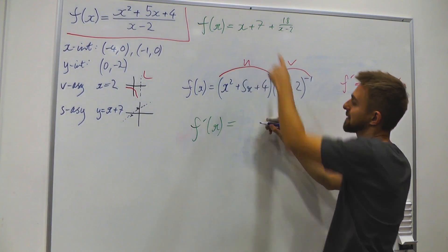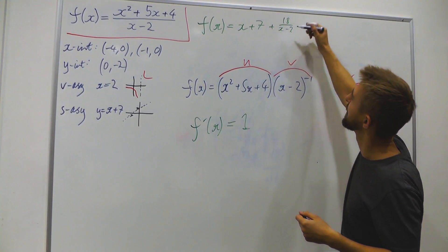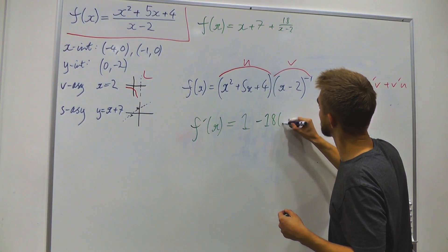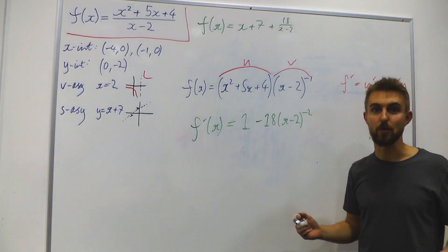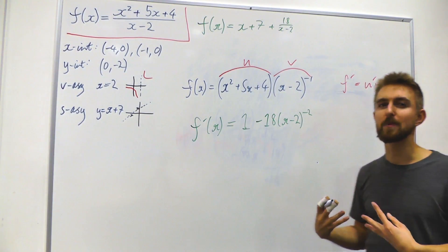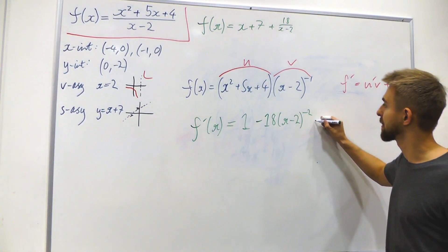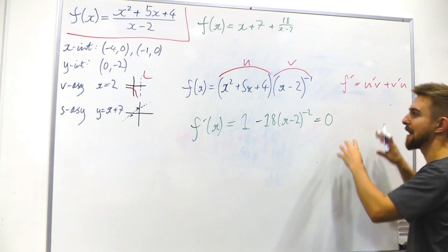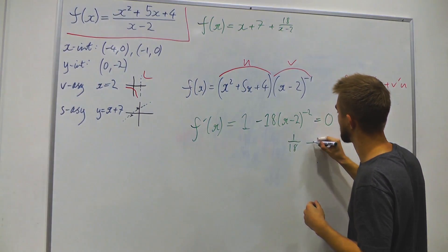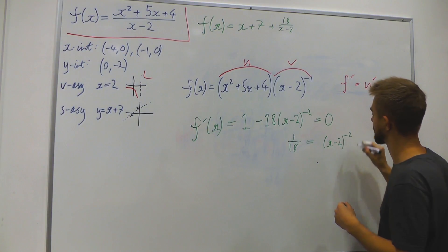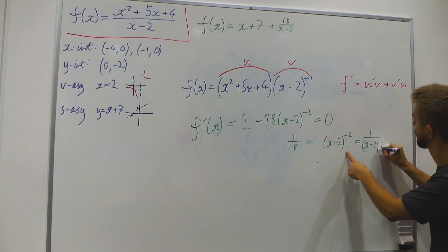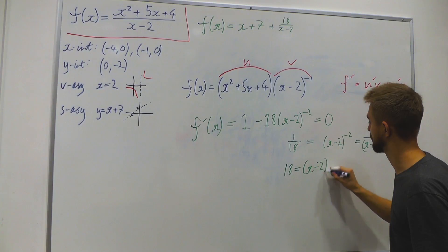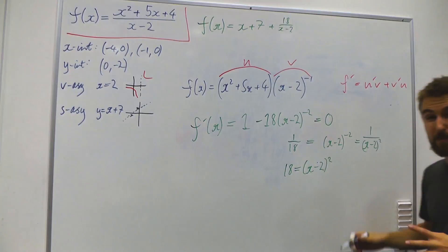Stationary points occur when f′(x) = 0. Setting 1 − 18(x − 2)^{−2} = 0 and rearranging: 18/(x − 2)² = 1, so (x − 2)² = 18. Flipping both sides and taking the square root of both sides gives x − 2 = ±√18.